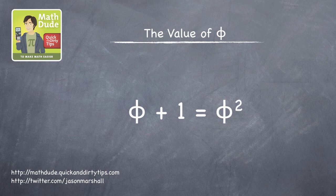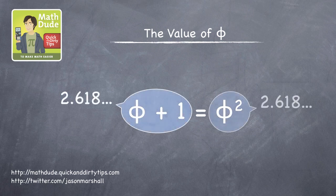And here's one. It satisfies phi plus 1 equals phi squared. That is, adding 1 to phi gives the same answer as squaring it, 2.618.